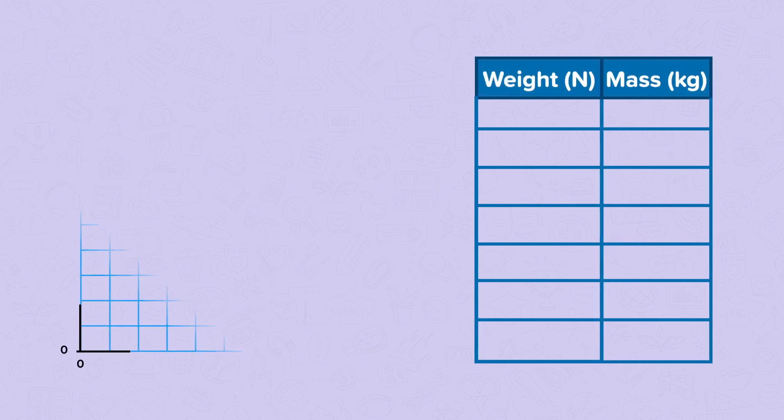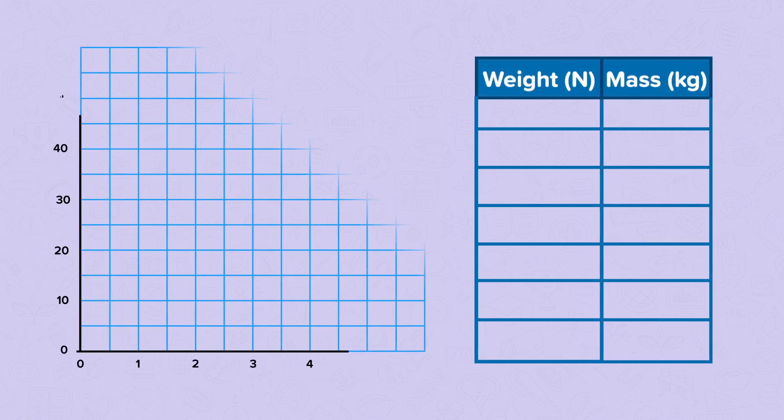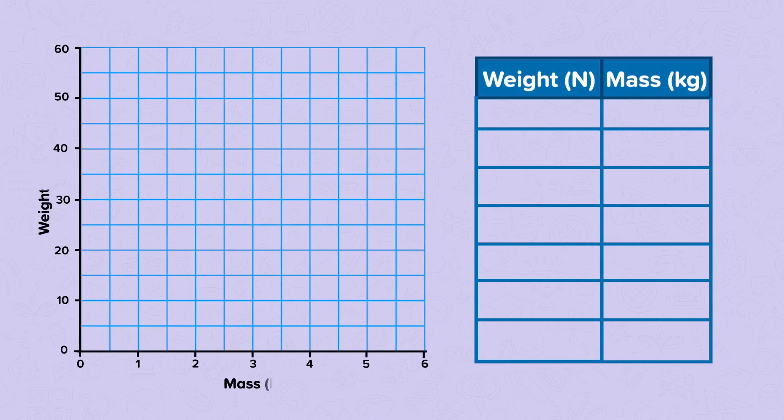To show that weight and mass are directly proportional and to identify the pattern, we will plot our data onto a graph with weight on the y-axis and mass on the x-axis. So let's plot our points onto our graph.